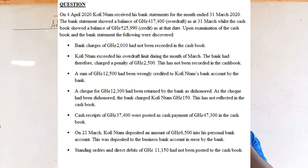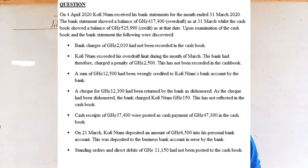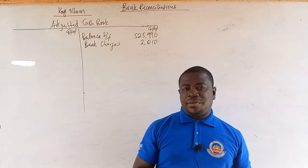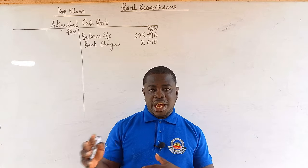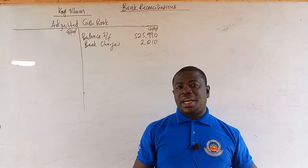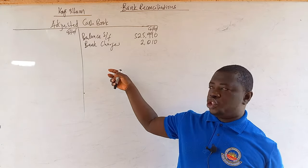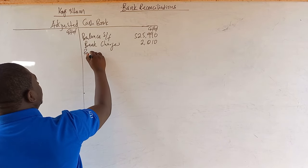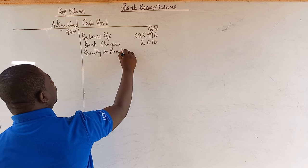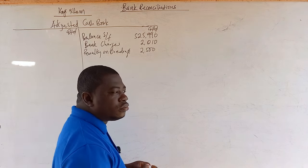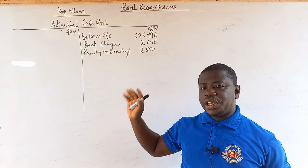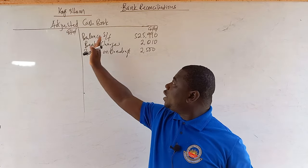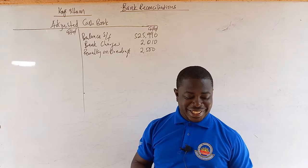Next, Kofintam exceeded his overdraft limit during the month of March. The bank charged a penalty of 2,500. Since this is charged by the bank, it will be debited to the bank statement, and therefore it should be credited to the cash book as a penalty on excess overdraft — 2,500. This is a charge, so it reduces the cash book balance. We are already in overdraft and still getting more charges.